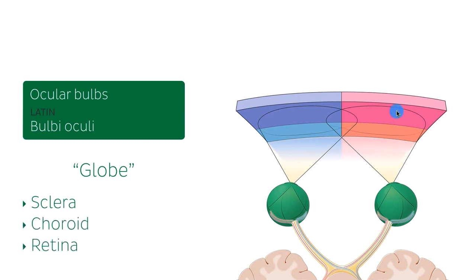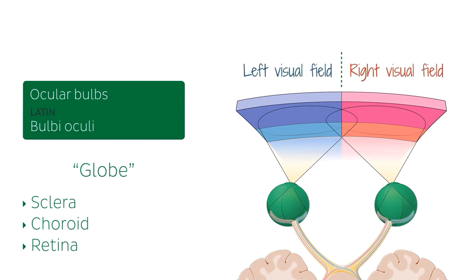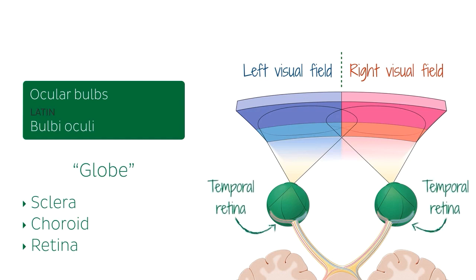In this image, these coloured areas in front of the ocular bulbs can be referred to as the visual field. The blue part can be considered the left visual field and the red part the right visual field. The retina can also be divided into two, with the lateral part closest to the temples called the temporal retina, and the medial part closest to the nose called the nasal retina. Now let's have a look at which side of the visual field will travel to which part of the retina.